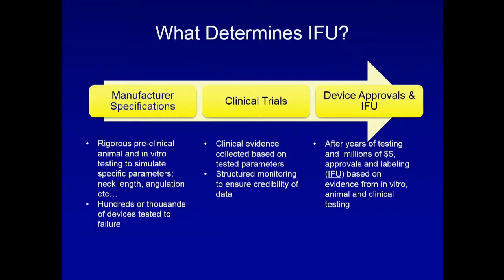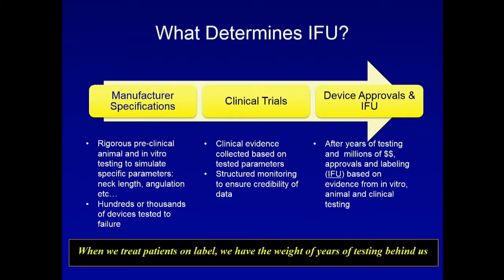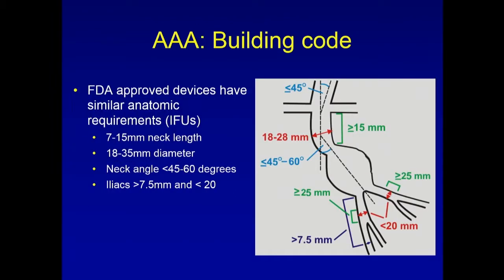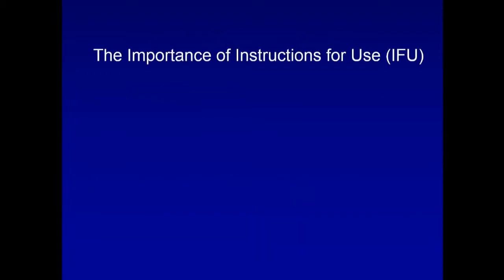So how do we avoid this? One of the first determining factors for endovascular versus open for me is whether the patient will fit into the IFU. We are stringent about sticking to it. All the money and years of testing behind these devices give you real support when you treat patients on-label. We now have devices that treat even fenestrated off-label cases, four millimeter necks, seven and thirteen millimeter devices, and different angle necks. But the point is these parameters are laid out for each device, and I recommend we stick to them.